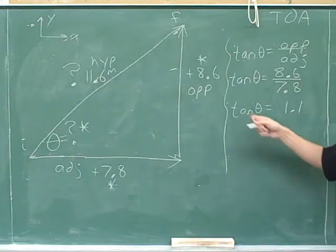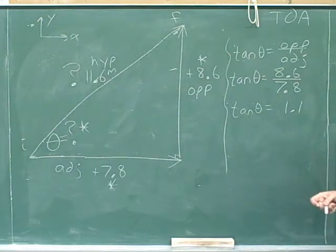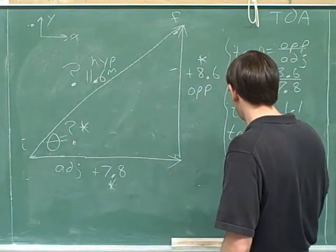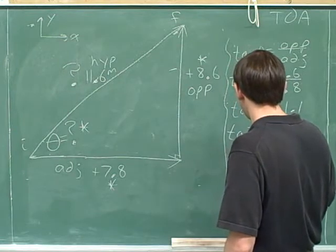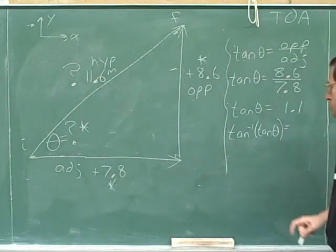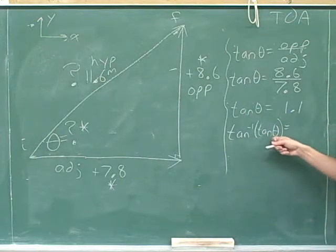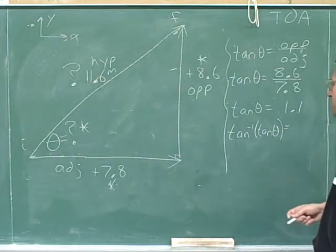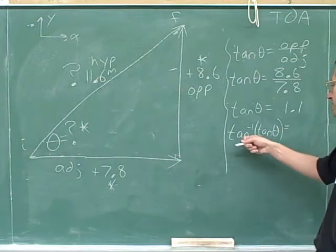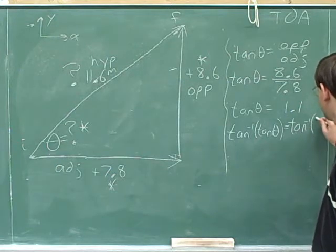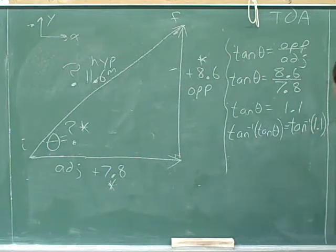To do that, we have to remove this tangent term. And we remove the tangent by doing the opposite of a tangent, which is an inverse tangent. So I've taken the left-hand side, the tangent of theta, and now I'm doing the opposite by taking the inverse tangent. But algebra says, the golden rule of algebra, is that if we've taken the inverse tangent of the left, we're obligated to also take the inverse tangent of the right-hand side.